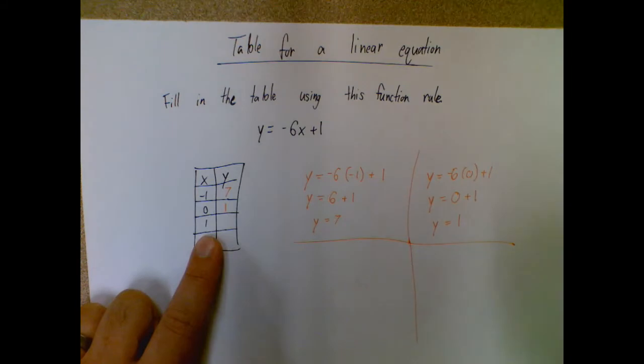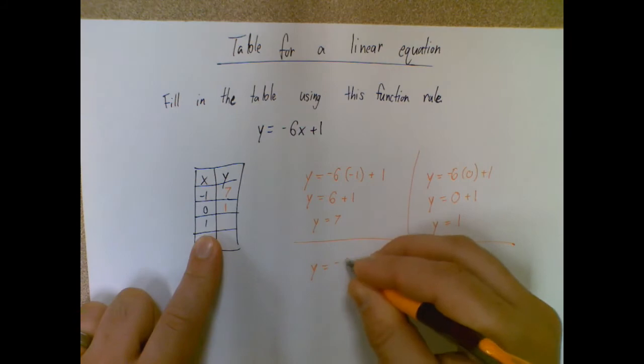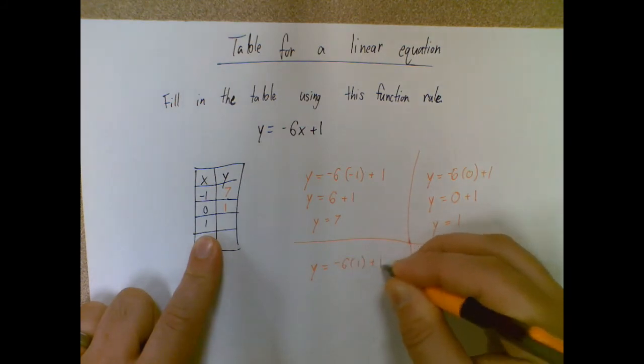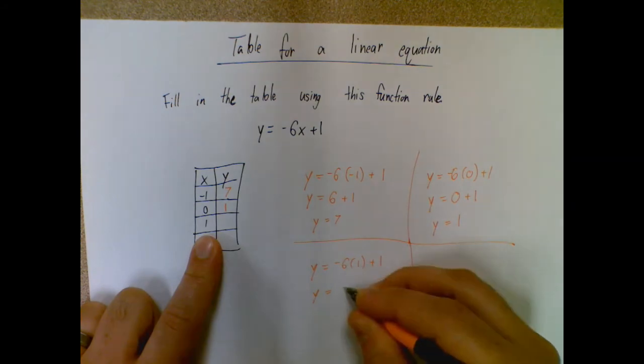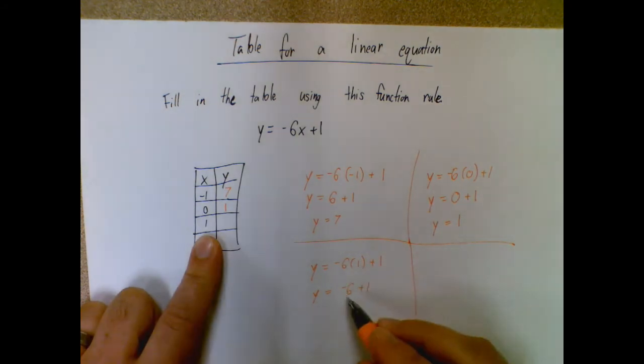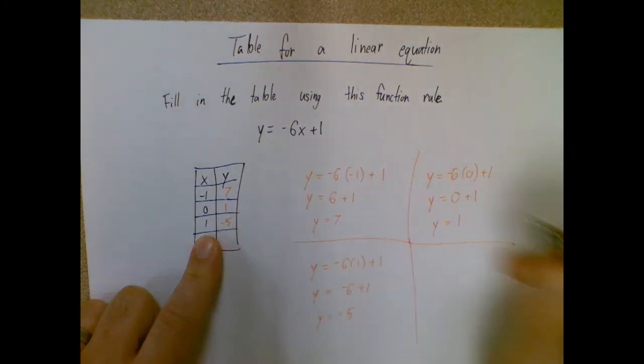Moving down, the same thing, but instead of negative one or zero, I'm going to plug in one. Negative six times one plus one, negative six times one is negative six, bring down the plus one. Now I have a negative plus a positive. So I end up with negative five here.